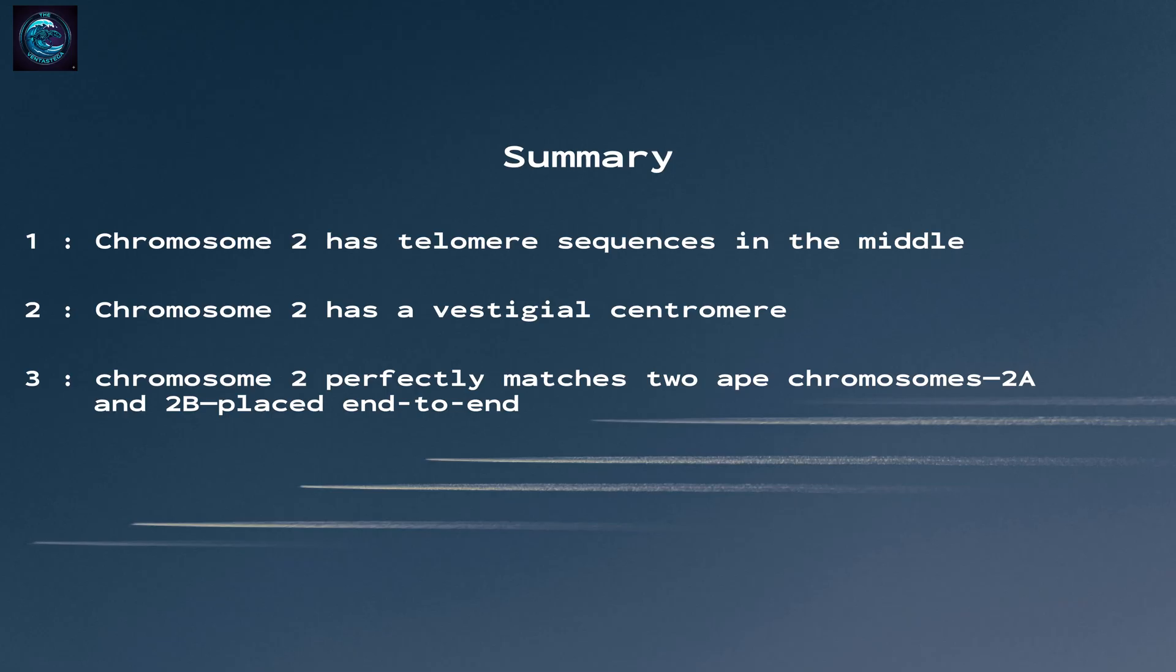Fourth, this was a prediction. Scientists predicted this fusion before they found it. They said, if humans and apes share a common ancestor, we should find evidence of a chromosome fusion. And that's exactly what they found.